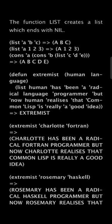Here you are seeing a function list that is creating proper lists. And the examples with the extremists, the Charlotte Fortran extremists and the Rosemary Haskell extremists are indeed nice ways to show you how things which are quoted are not having any symbol value attributed to them, whereas human and language do get the value which is defined in the function when it is being called. So again the examples are not bad.